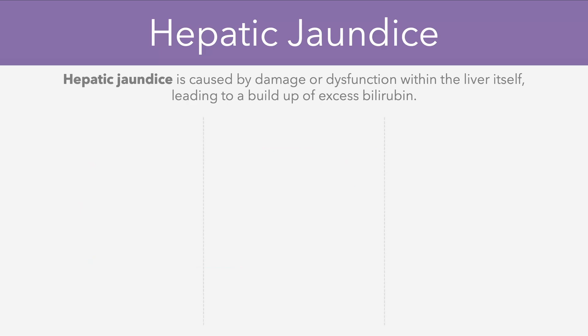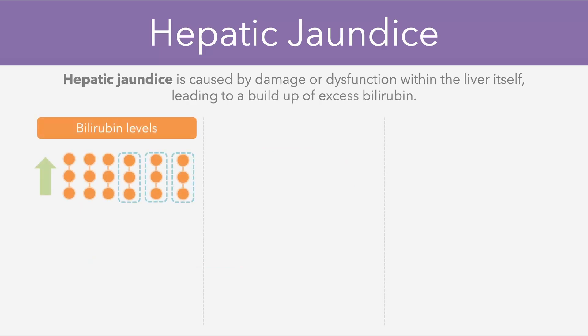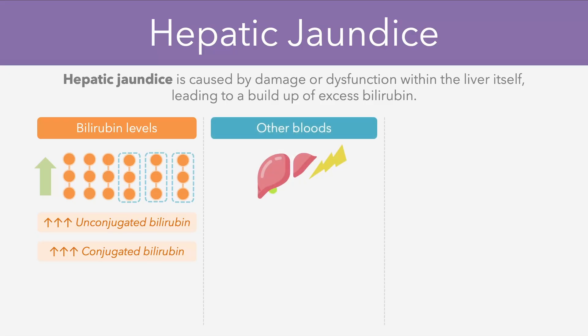The key features of hepatic jaundice involve a rise in both the unconjugated and conjugated bilirubin levels. As well as this, there might be some other blood test results which indicate hepatic damage. For example, we often see a significant rise in the AST and ALT enzymes, which are produced by the hepatocytes. In some cases, we might also see prolonged clotting times, such as a prolonged prothrombin time.